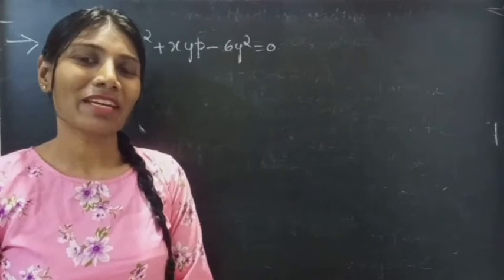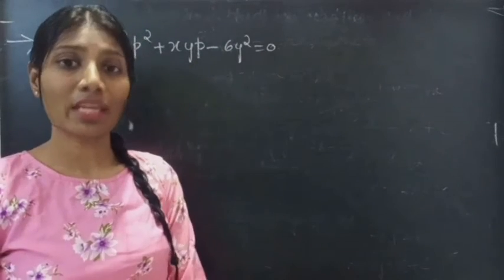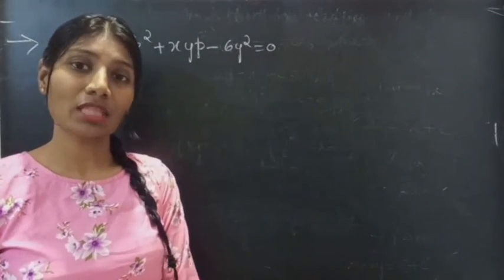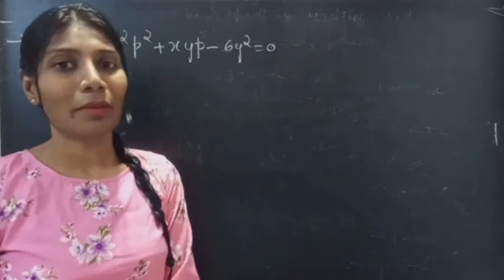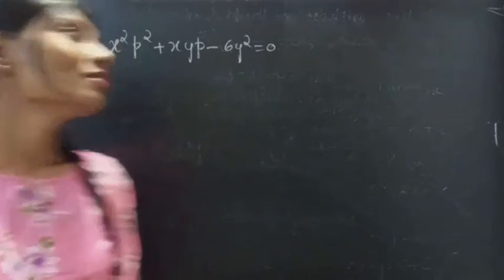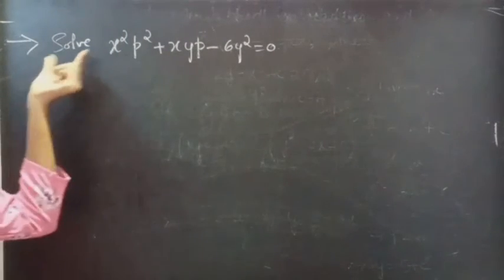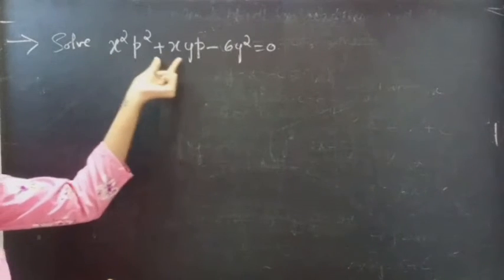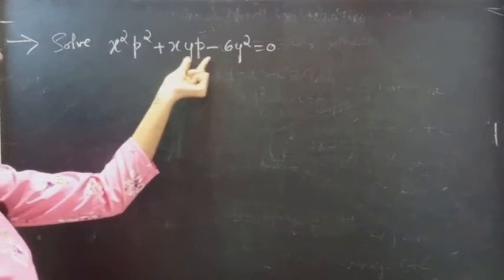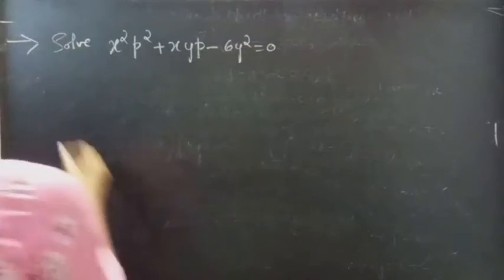Hello everyone, this is Jekalpna here. In this video we are going to solve an equation using the Solvable for P method. Problem: solve x squared p squared plus xy·p minus 6y squared equals zero.